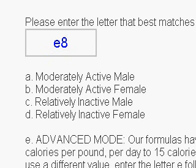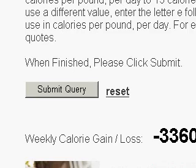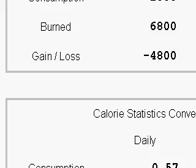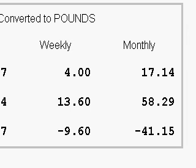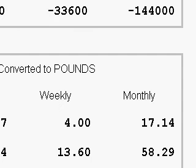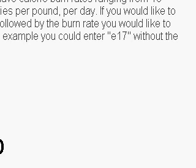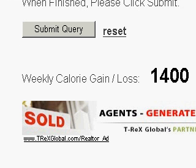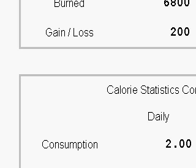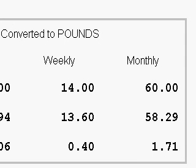Say you were in the Olympics and burned 40 calories per pound per day. You'll see that on a weekly basis you'd lose 33,600 calories, and per month you'd lose the equivalent of 41 pounds. Since you're burning so many calories, you'd need to eat more — let's go to 7,000 calories. Now you see a 1,400 calorie gain, and converting to pounds, you gain 1.71 pounds per month. That's why Olympians eat so much more — you're always reading about them eating 10,000 or 12,000 calories a day.